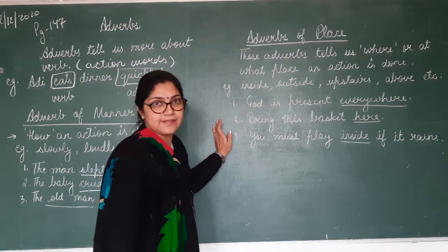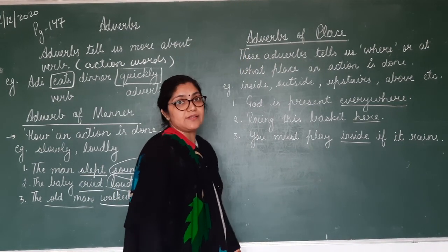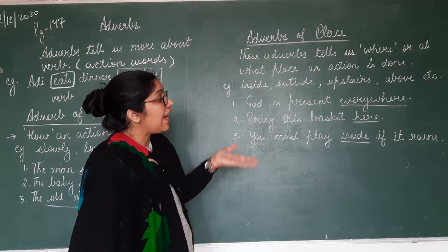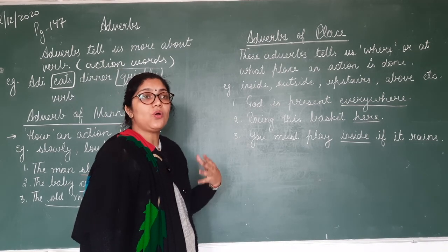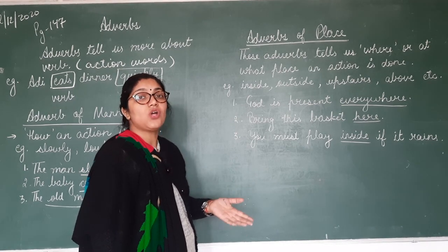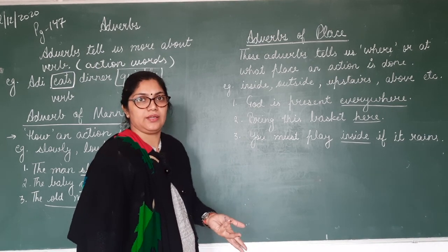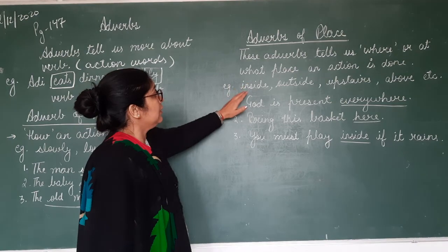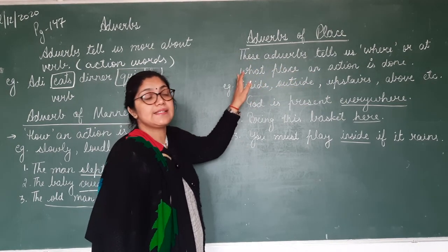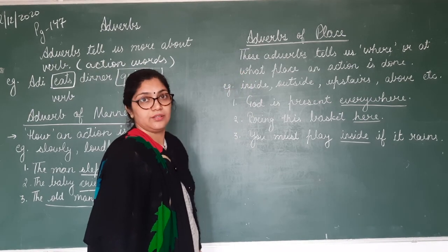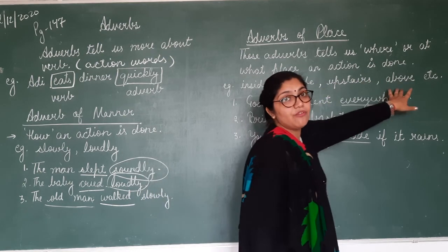Now comes adverbs of place. What is adverb of place? Yeh aapko batata hai where or at what place the action has been done. Ki jo action ho rahi hai, jo aapki verb hai, woh kis place pe ho rahi hai, kahan par ho rahi hai. These adverbs tell us where or at what place an action is done. For example: inside, outside, upstairs, above, etc.